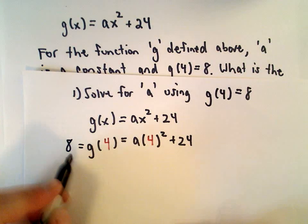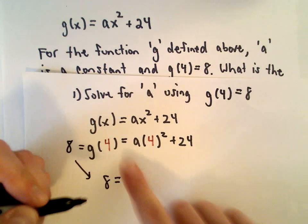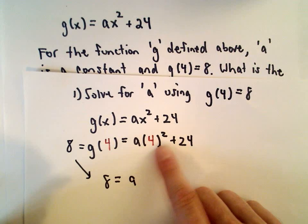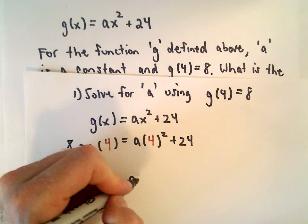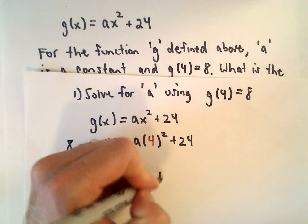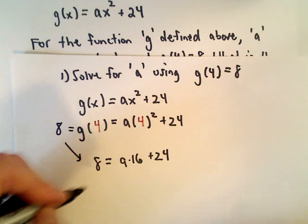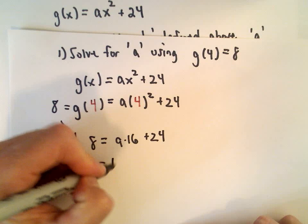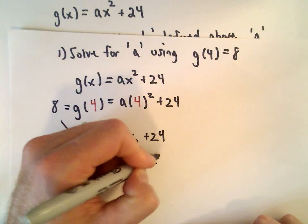So I can rewrite this. We have 8 equals a multiplied by 4 squared. 4 squared is just going to be 16 plus 24. So I'm going to rewrite this one more time. We have 8 equals 16 multiplied by a plus 24.